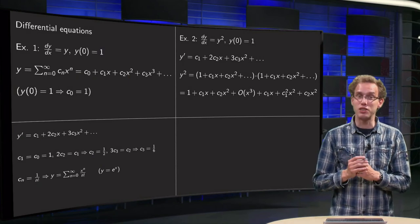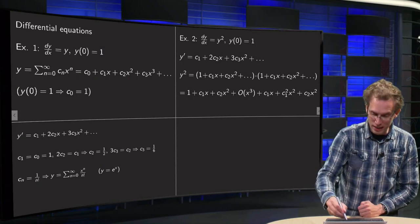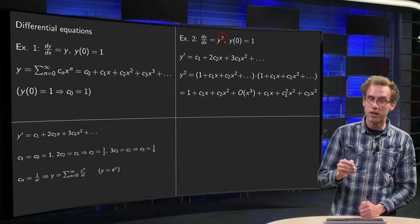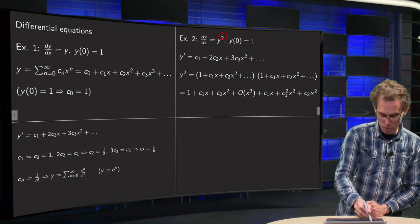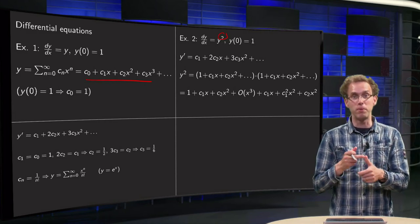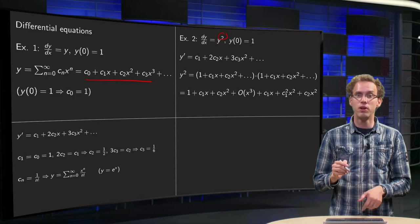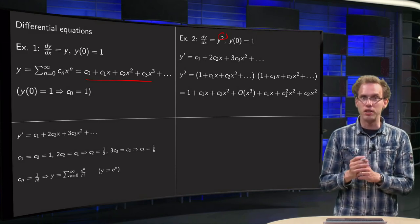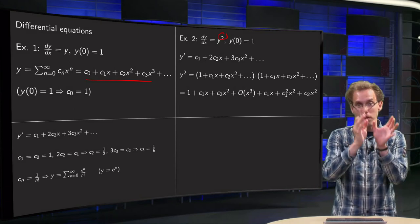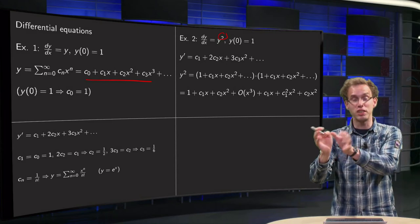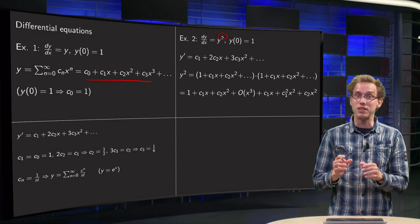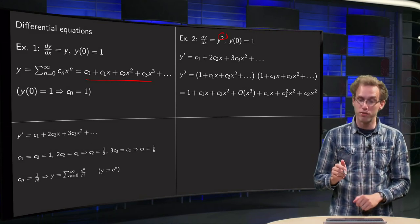Onto the next example — almost the same, but we only added a square: y prime equals y squared. We follow the same strategy with the same power series for y. We need to compute y prime and y squared and set them equal. y prime is easy — just differentiation. y squared is a bit annoying because that is a power series times another power series — a product of two power series, which is annoying since they both have infinitely many terms.